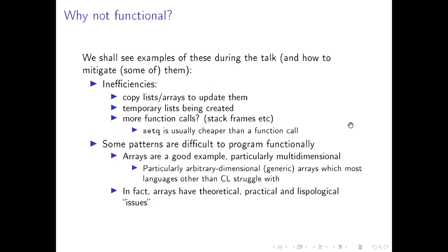There are also cases where you may not want to do functional programming. One of them is inefficiencies that might crop up compared with the imperative approach, where you loop through variables. Often you will find that there will be temporary lists and things created during some calculation, where a loop would just go through one thing at a time with no temporary lists created. So potentially the imperative version can be faster and create fewer cons cells that need to be garbage collected later.